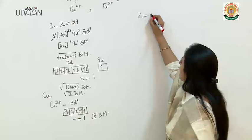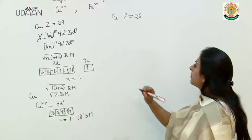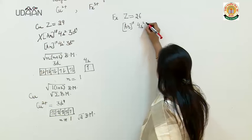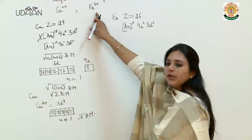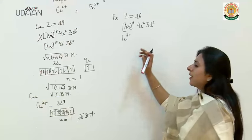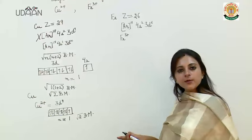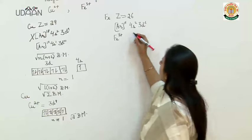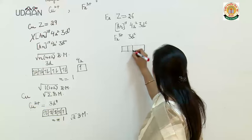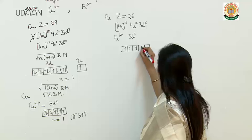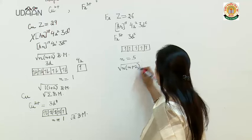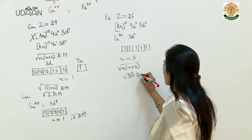For iron, Z=26, the configuration is [Ar] 4s² 3d⁶. For Fe³⁺, we remove 3 electrons — first 2 from 4s and then 1 from 3d — giving configuration 3d⁵. Writing 5 electrons in 5 d orbitals, n = 5 unpaired electrons. Applying the magnetic moment formula √(n(n+2)), the answer would be √35 Bohr magnetons.